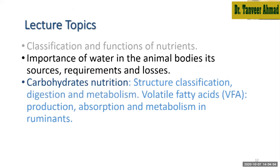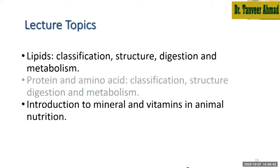We will discuss the classification and function of nutrients, then the importance of water. For each individual nutrient — carbohydrate, lipid, and protein — we will discuss their structure, classification, digestion, and metabolism. In the case of carbohydrates in ruminant animals, there is production of volatile fatty acids in the rumen — how they are produced, absorbed, and metabolized. In monogastric species, ruminal fermentation is not present; this is more particular to ruminant animals. Similarly, we will cover lipids and protein, then minerals and vitamins.